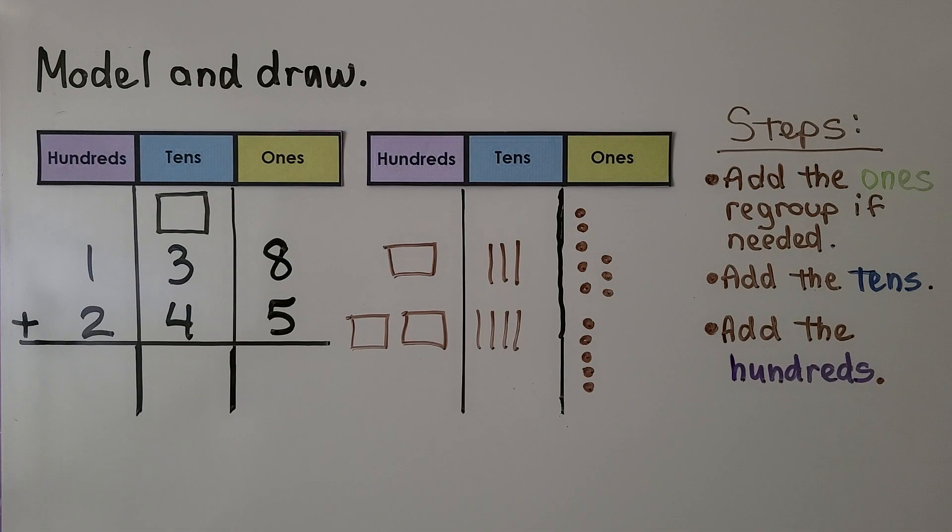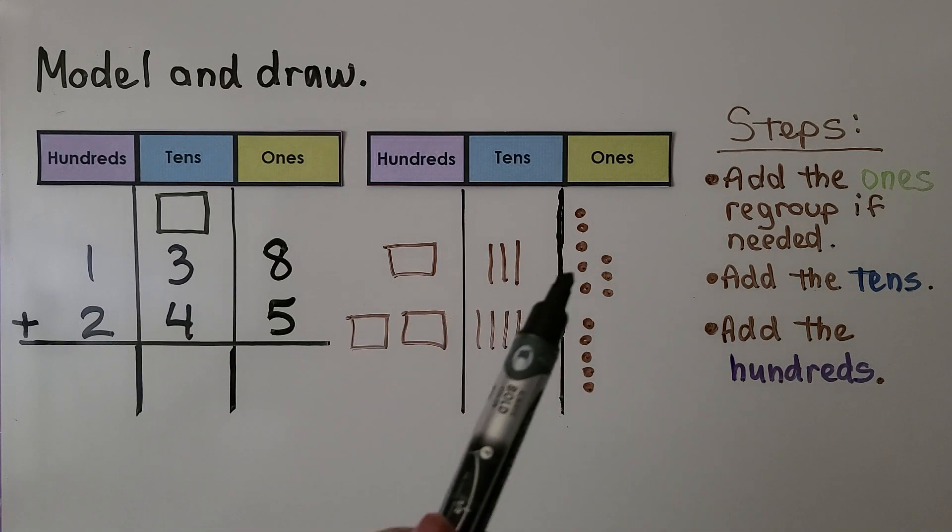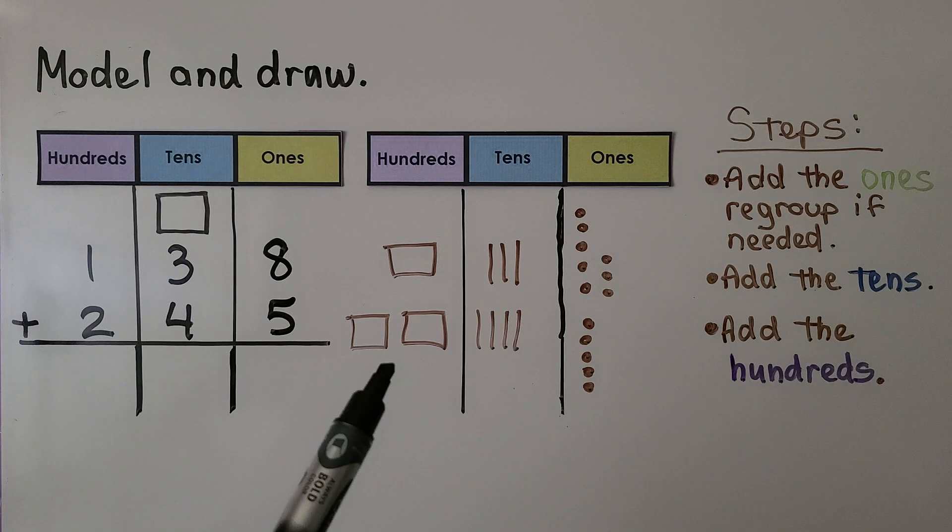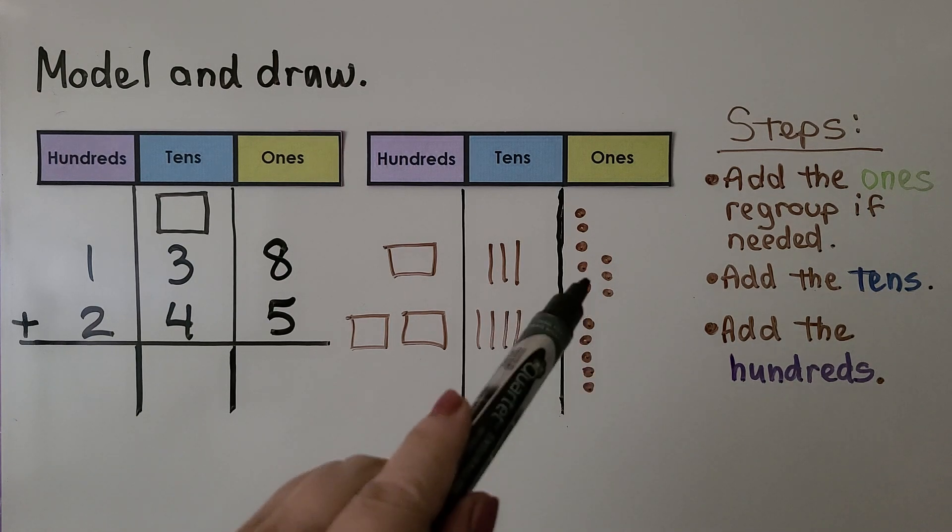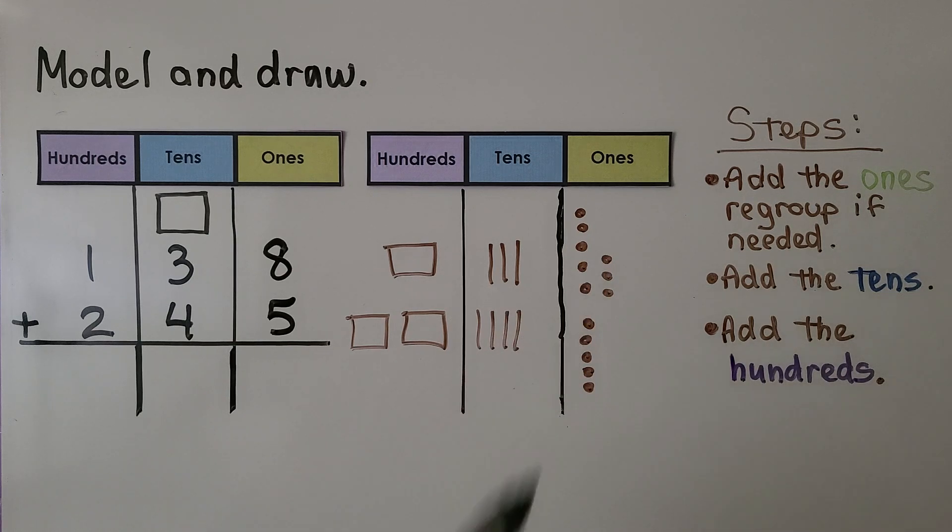So one more time. This is how we would model and draw 138 plus 245. We have 100, three tens, eight ones. We have two hundreds, four tens, five ones. We start by adding the ones. We have 13 ones. We have five, ten, eleven, twelve, thirteen.